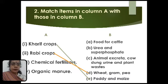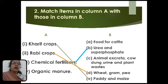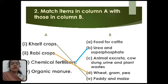Next is chemical fertilizers. Chemical fertilizers match with option B, that is urea and super phosphate. And next is organic manure — manure obtained from the excretory products of animals and from dead, decaying organic matter. Organic manure will match with C, that is animal excreta, cow dung,